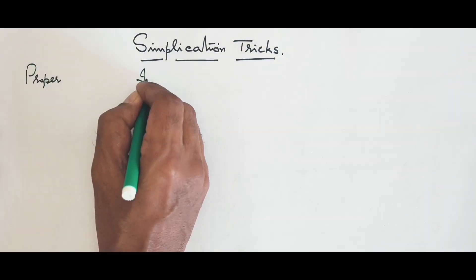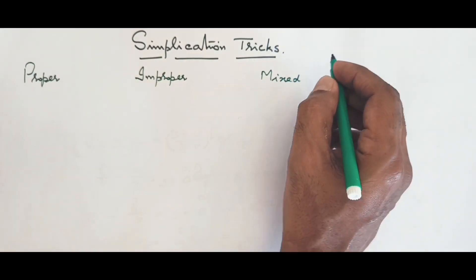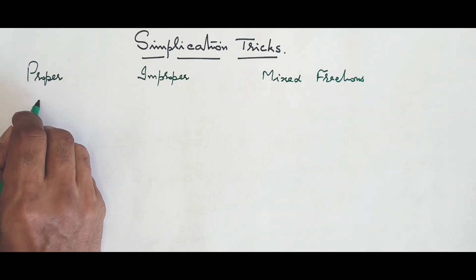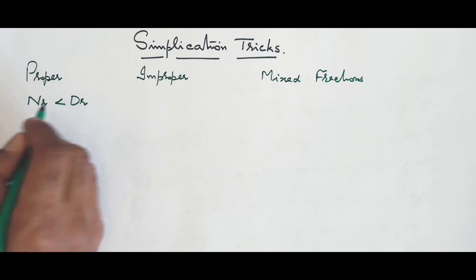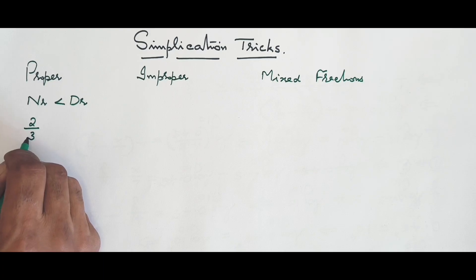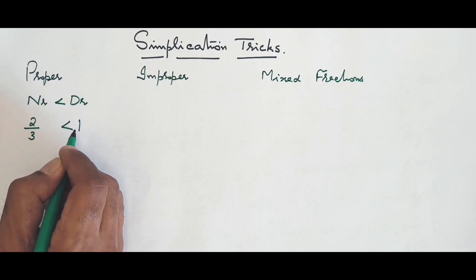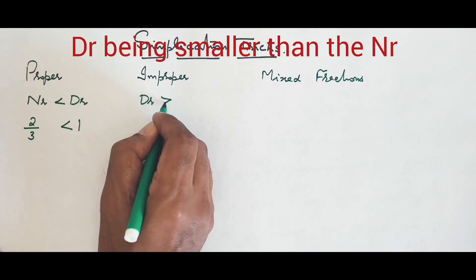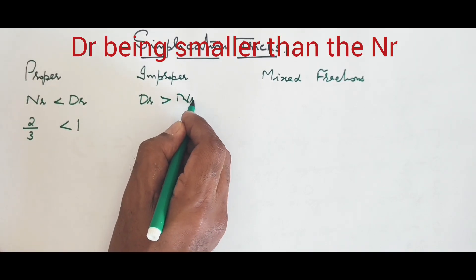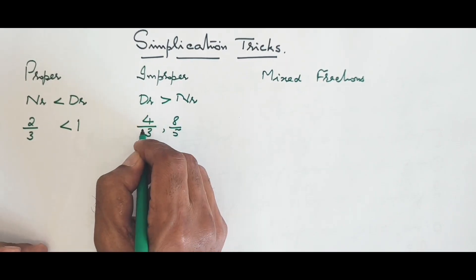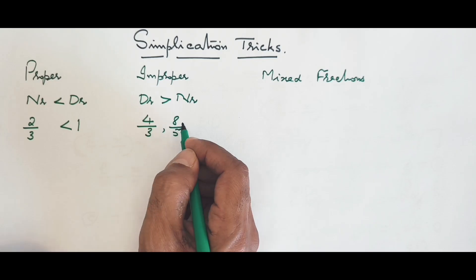The three types are: proper fractions, improper fractions, and mixed fractions. A proper fraction is one in which the numerator is less than the denominator — for example, two over three. Two is the numerator, three is the denominator. All proper fractions are less than one. An improper fraction is one where the numerator is bigger than the denominator — for example, four over three or eight over five — and an improper fraction is always greater than one.